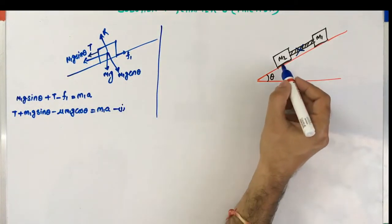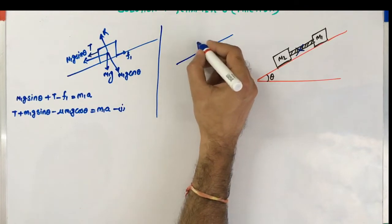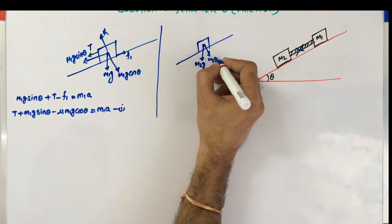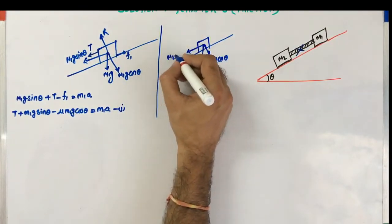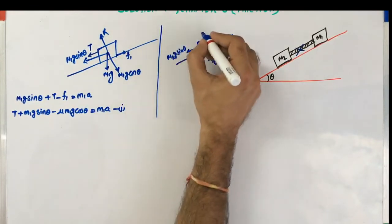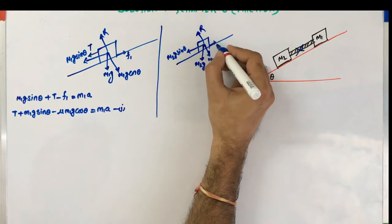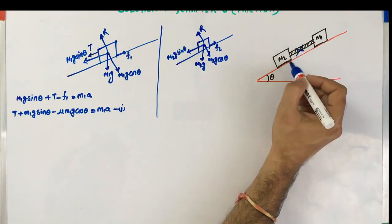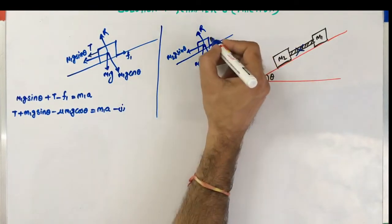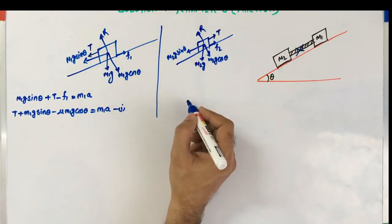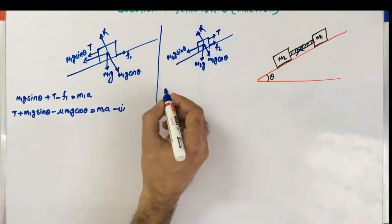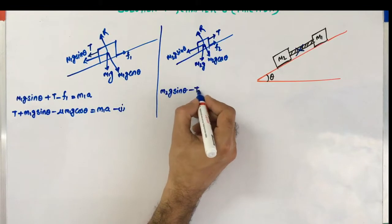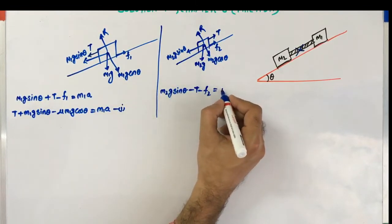For the free body diagram of M2: M2G sin(theta) acts along the incline downward, M2G cos(theta) is the normal component, the friction force F2 acts in the upward direction, and this time the tension T tries to pull M2 in the upward direction. So we write the equation of motion as M2G sin(theta) minus T minus F2 equals M2A.